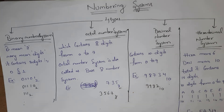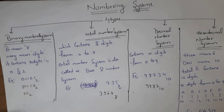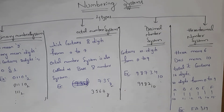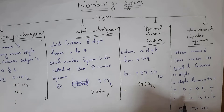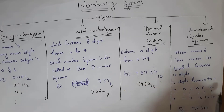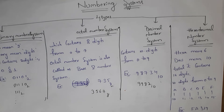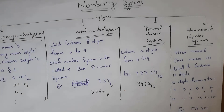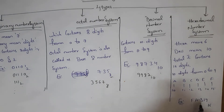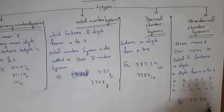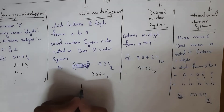The hexadecimal number system: 'hexa' means 6 and 'deci' means 10, so total it contains 16 digits. We also call it the base-16 number system. It contains numbers from 0 to 9, and then alphabets A, B, C, D, E, F — where A represents 10, B represents 11, C means 12, D means 13, E means 14, and F means 15. Total it contains 16 digits from 0 to 15. An example is FA319 base 16.